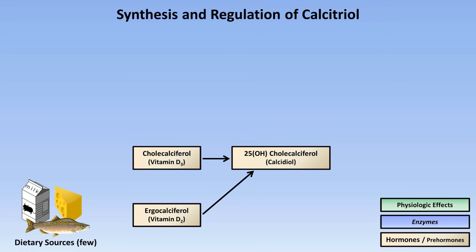There are a few dietary sources of these precursors to active vitamin D. In the U.S., the major dietary source is supplementation of dairy products and, to a lesser extent, cereals and grain products. For historical reasons, most U.S. food companies supplement with vitamin D2. The minor dietary source in the U.S. is naturally occurring vitamin D3 found predominantly in salmon, tuna, and swordfish, and most prominently in cod liver oil. The most prominent source of these vitamin D precursors, however, is not our diet.